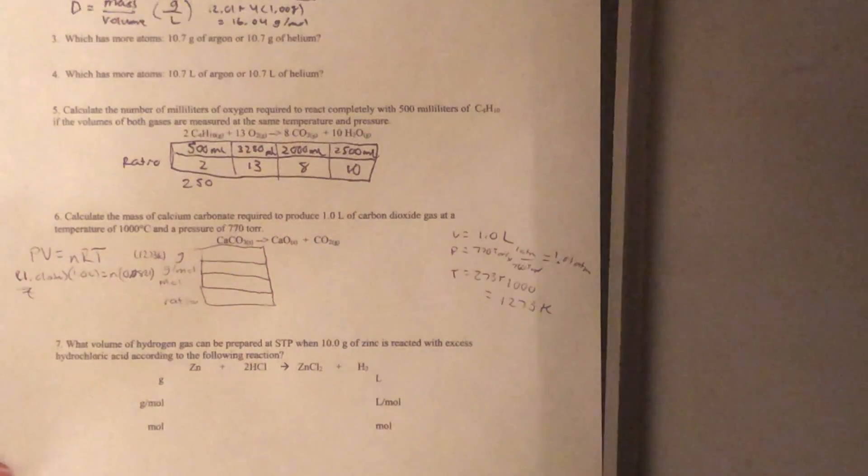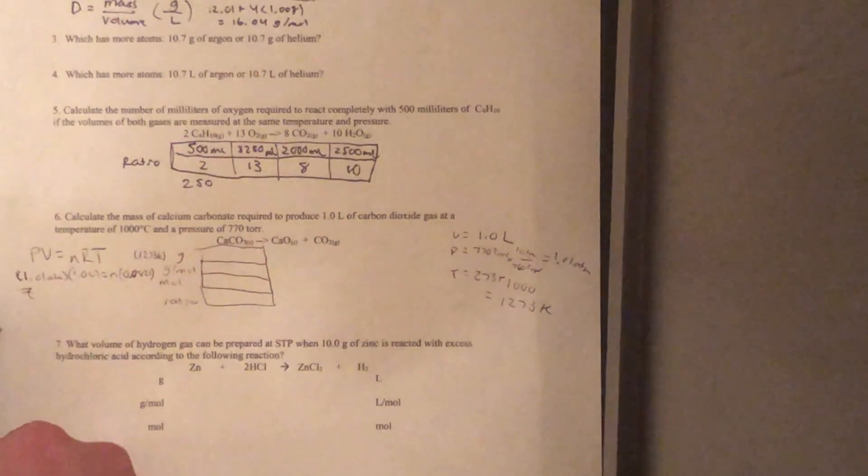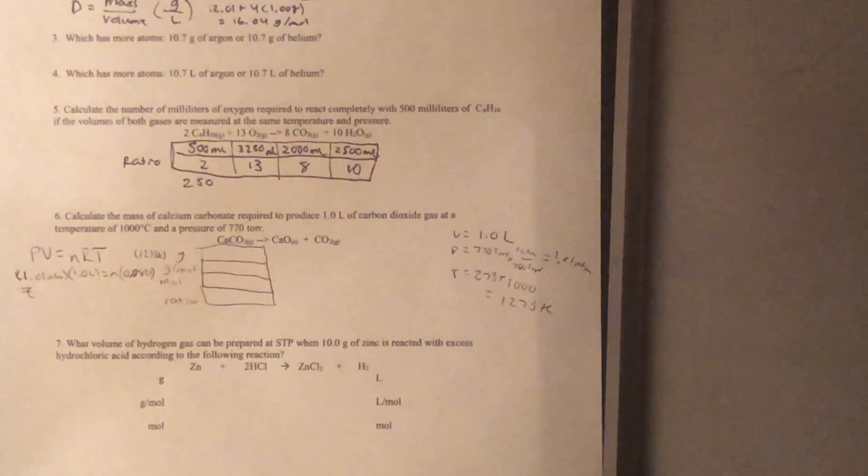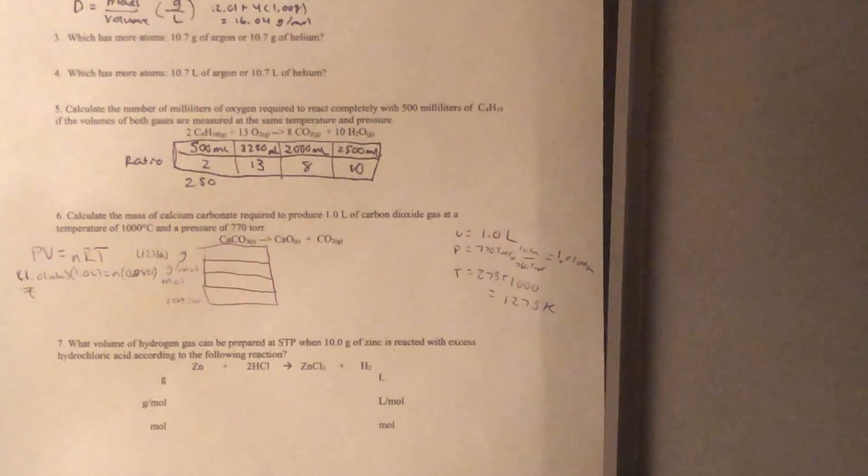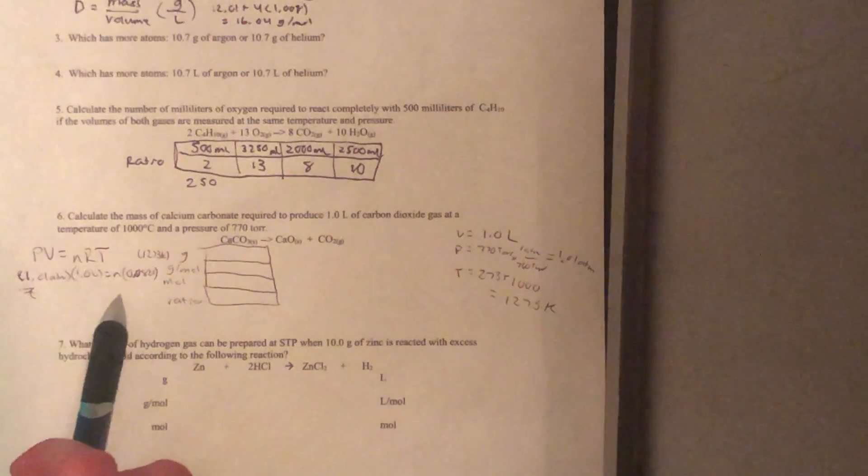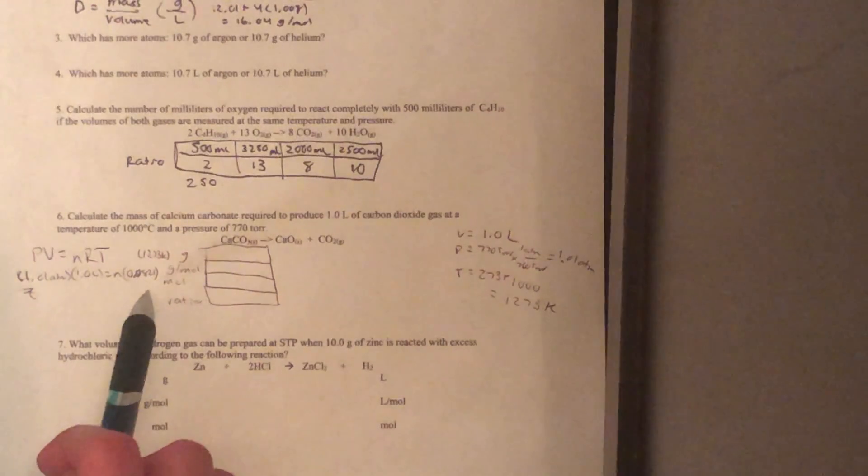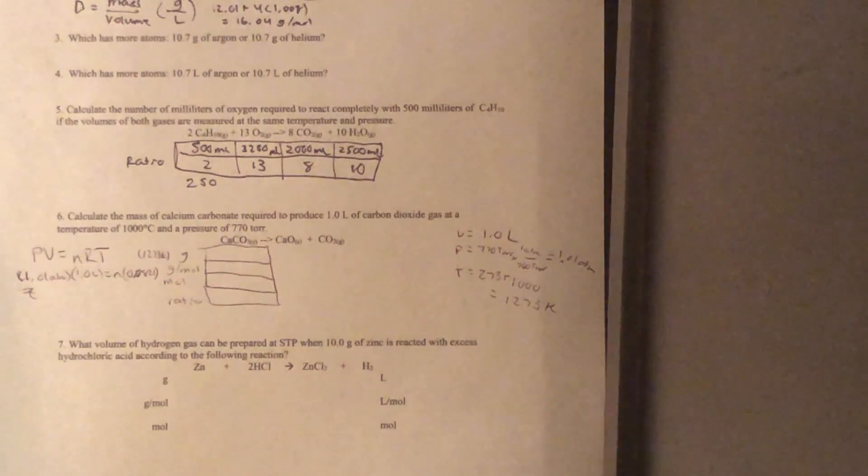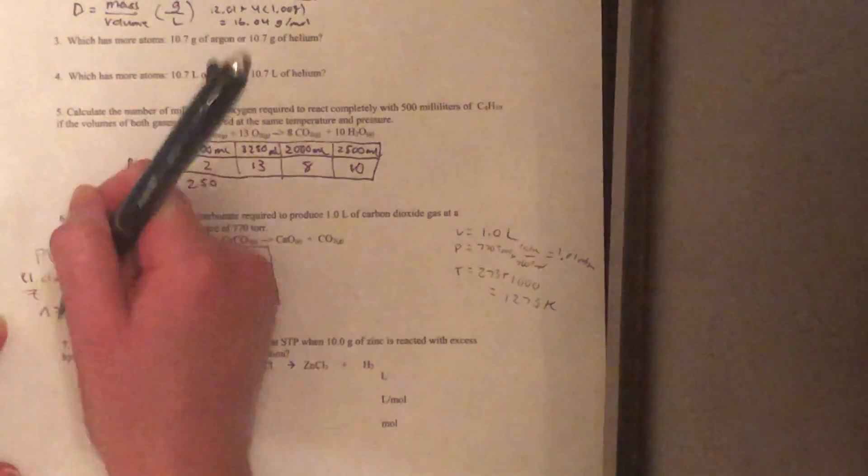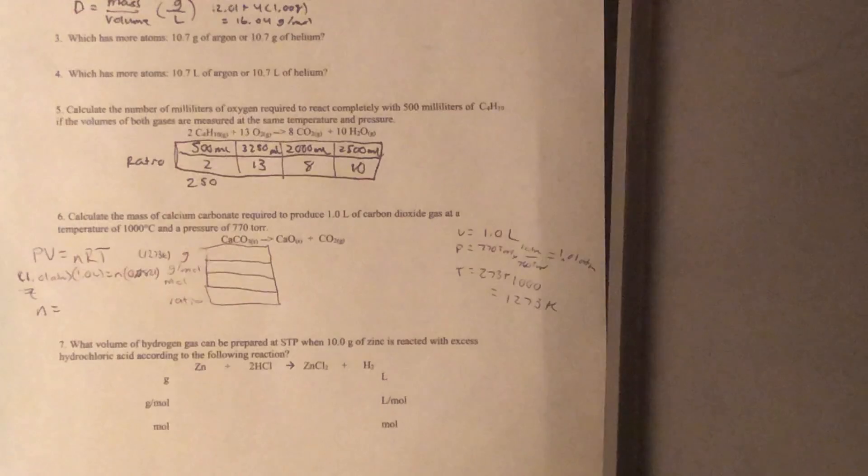So we want to get the n by itself. What we're going to do is multiply the 1.01 times the 1.0 liters, and then we're going to divide by the R, or the 0.0821, and divide by the 1,273 Kelvin. And that's going to give us 0.00966 moles.